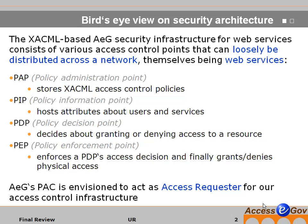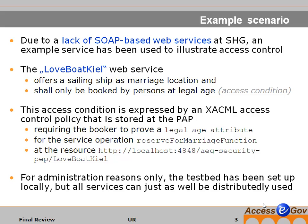The access requester in our scenario is the AXIS Eagle's personal assistant client. Due to a lack of SOAP-based web services that our user partners use at this time, an example service has been used to illustrate the access control. Just imagine the captain is offering a web service called Love Boat Charter in order to reserve a sailing ship as a marriage location, and the marriage location should only be booked by persons of legal age. This is the access condition in our case.